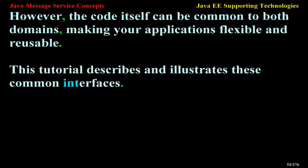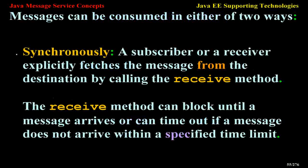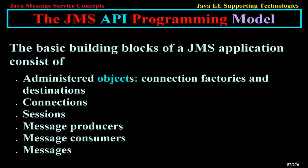Message Consumption. Messaging products are inherently asynchronous — there is no fundamental timing dependency between the production and the consumption of a message. Messages can be consumed in either of two ways. Synchronously: a subscriber or receiver explicitly fetches the message from the destination by calling the receive method. The receive method can block until a message arrives or can time out if a message does not arrive within a specified time limit. Asynchronously: a client can register a message listener with the consumer. Whenever a message arrives at the destination, the JMS provider delivers the message by calling the listener's onMessage method.